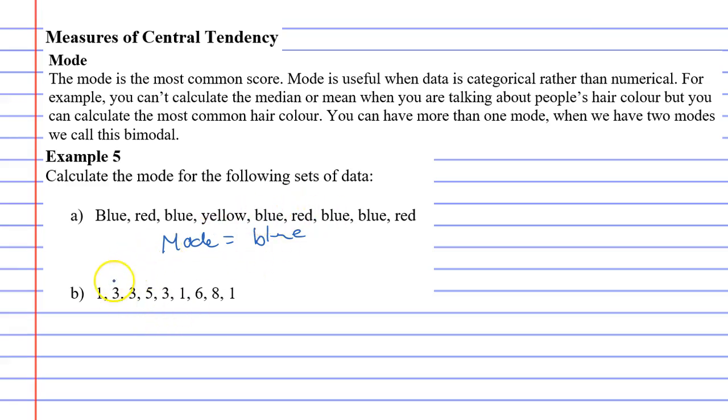Now we'll answer question B and calculate the mode for this one. This one actually has two modes. The mode is 1 or 3 because they both have the same amount. And when this happens, we call this bimodal.